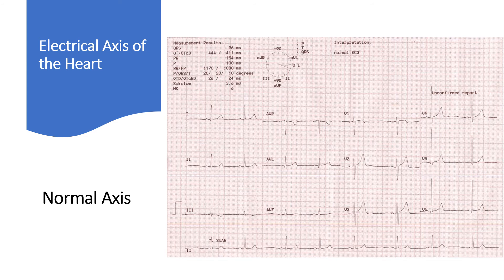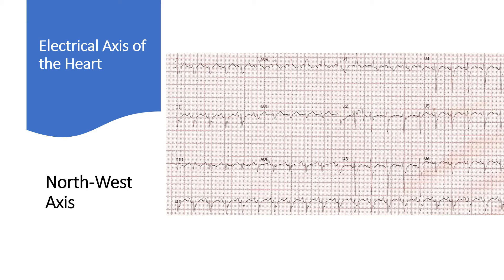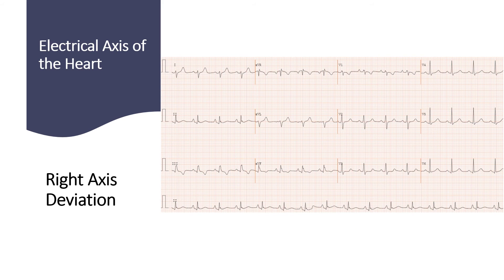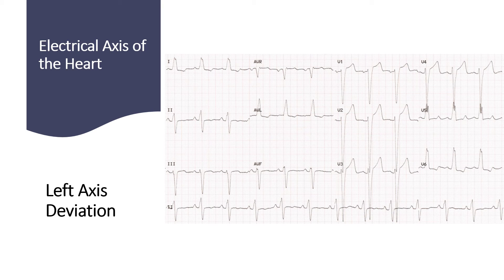An ECG showing normal QRS axis with both lead 1 and AVF positive is shown, with right bundle branch block and sinus tachycardia also present. An ECG showing right axis deviation is presented; in addition, there is right bundle branch block with very wide QRS and ectopic atrial tachycardia with 2-to-1 conduction. Another ECG with right axis deviation shows QRS in lead 1 as negative and that in AVF as positive. An ECG showing left axis deviation presents positive QRS in lead 1 and negative QRS in AVF, with left bundle branch block also present.